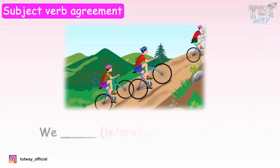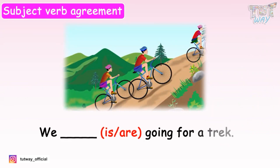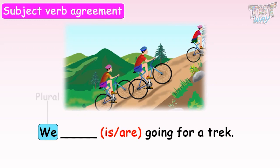We dash going for a trip. We are given two options: is and are. The subject is we, which is plural, so we will use are. We are going for a trip.